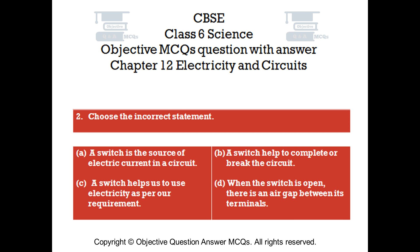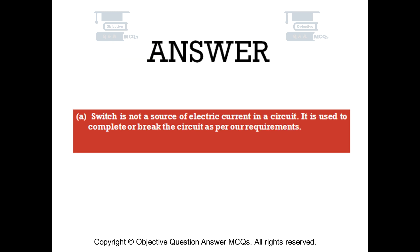Question number 2. Choose the incorrect statement. Option A: A switch is the source of electric current in a circuit. Option B: A switch helps to complete or break the circuit. Option C: A switch helps us to use electricity as per our requirement. Option D: When the switch is open, there is an air gap between its terminals. The right answer is option A. A switch is not a source of electric current in a circuit; it is used to complete or break the circuit as per our requirements.